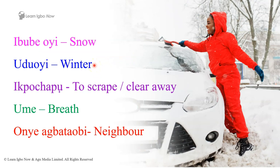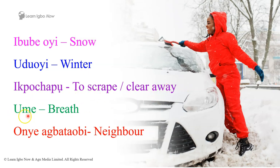And so the five key words we've learned in this story are: ibuboyi — snow; uduoyi — winter; ibubo chapo — to scrape or clear away; ume — breath; onya abwatubi — neighbor.